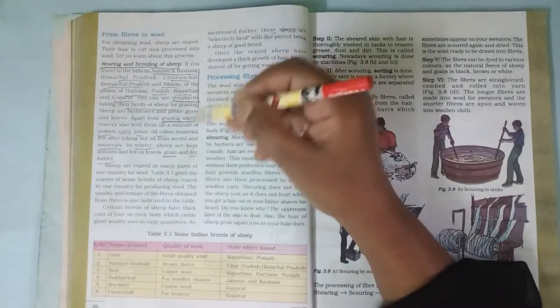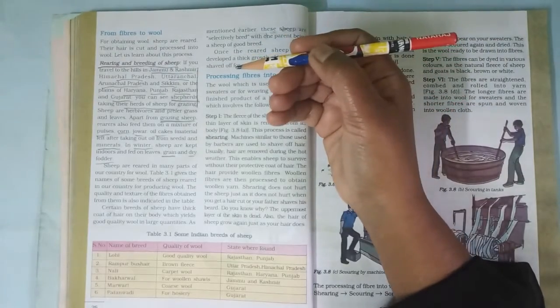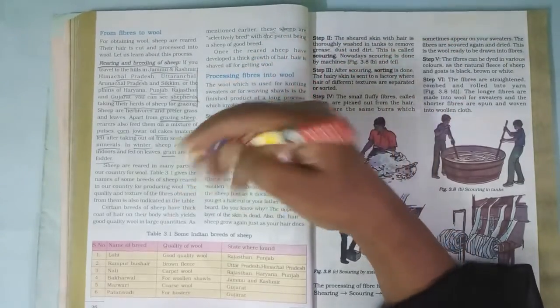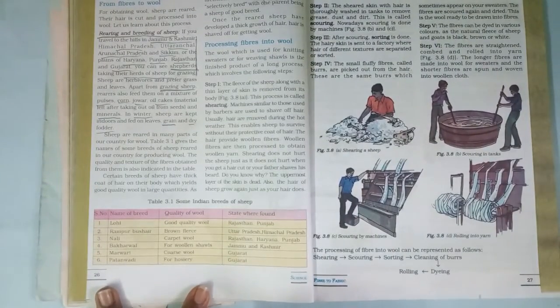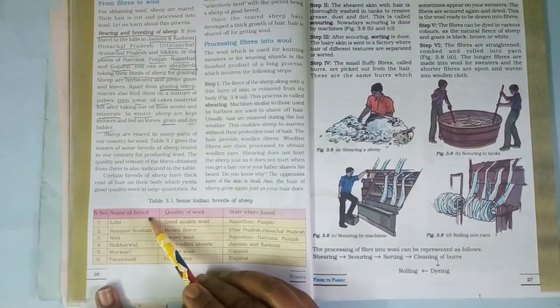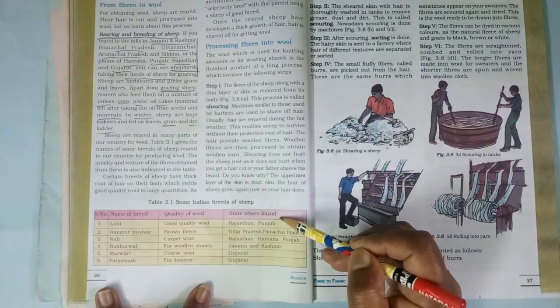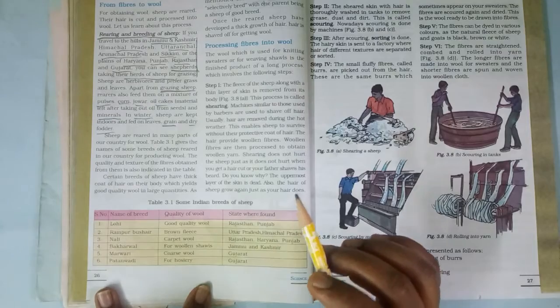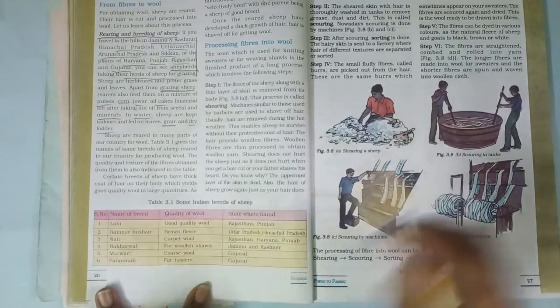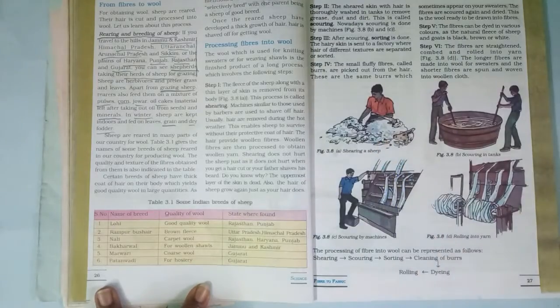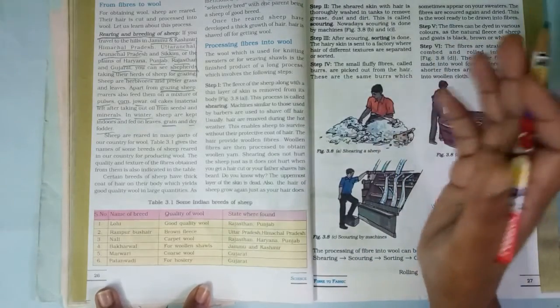That is one part, children. Apart from that, as I told you, in different states of India we find this type of animal. There is a small table given in our textbook stating what type of breed, what type of wool, and in which state of our country this is available. We have different types of breeds. We learned in the previous class that there are several breeds of sheep found in different parts of our country.